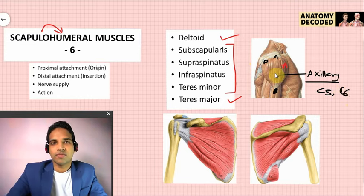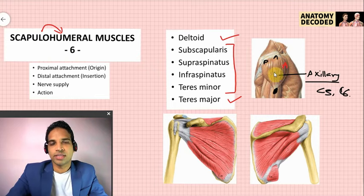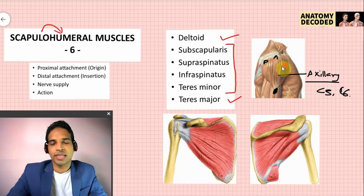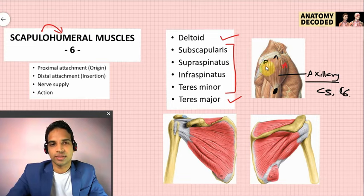Actions of deltoid: it is the chief abductor of the shoulder joint, especially the middle fibers, responsible for 15 to 90 degrees of abduction. Anterior fibers help in flexion at the shoulder joint, and posterior fibers help in extension at the shoulder joint.